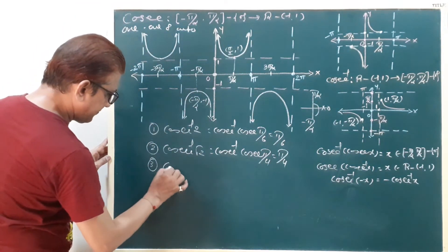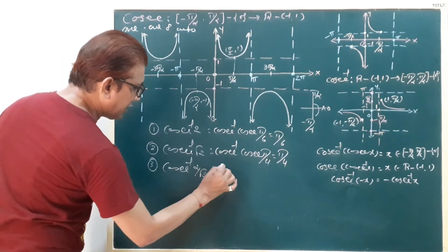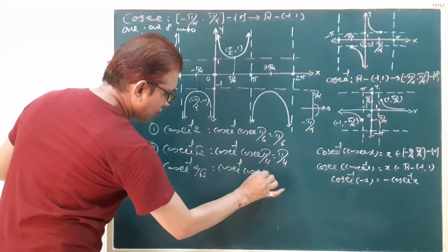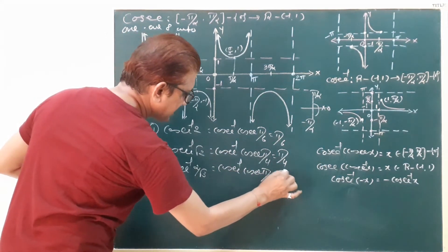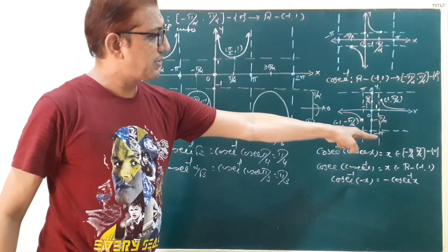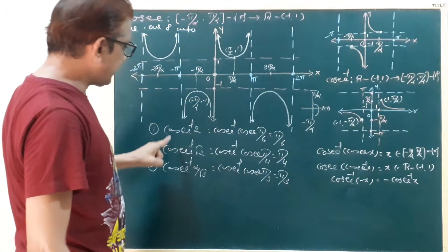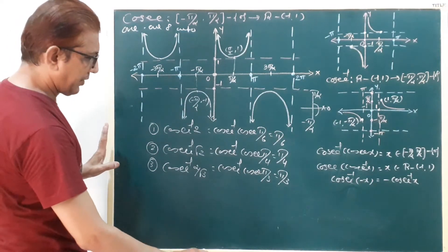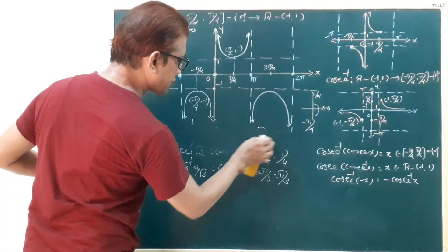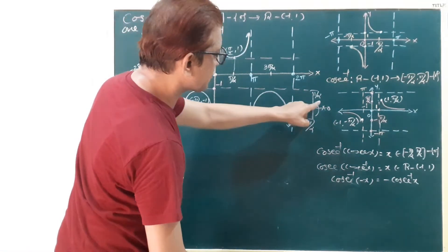Third: cosecant inverse of 2 by root 3. So cosecant inverse of cosecant pi by 3, the answer is pi by 3, which belongs to the closed interval minus pi by 2 to pi by 2, minus {0}. These first three answers are all in the first quadrant, all positive values.